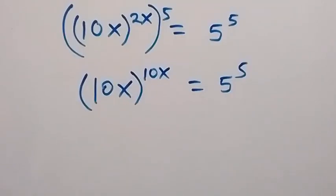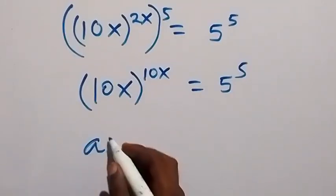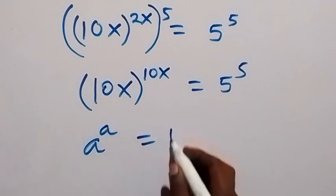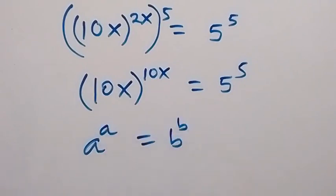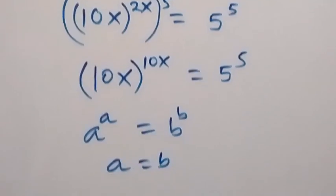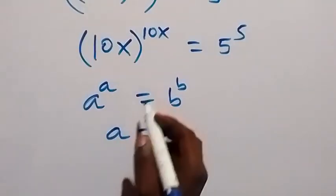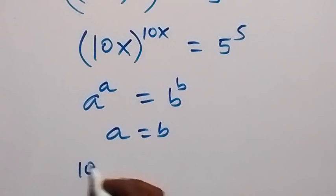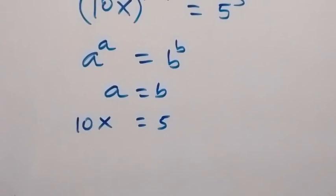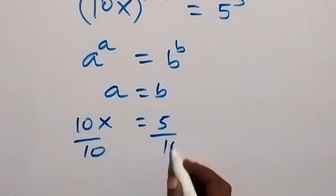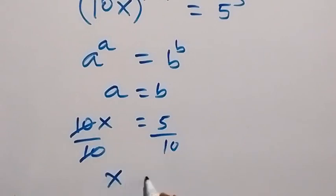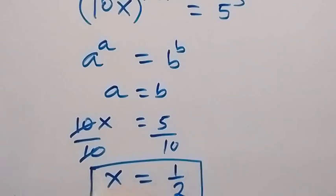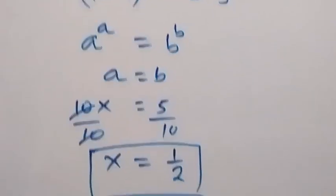Then from here, this follows from: if we have a raised to power a equals b raised to power b, then a equals b. So following this here, we can say that 10x equals 5. Dividing both sides by 10, the 10 cancels out, so we have x equals 1 over 2.